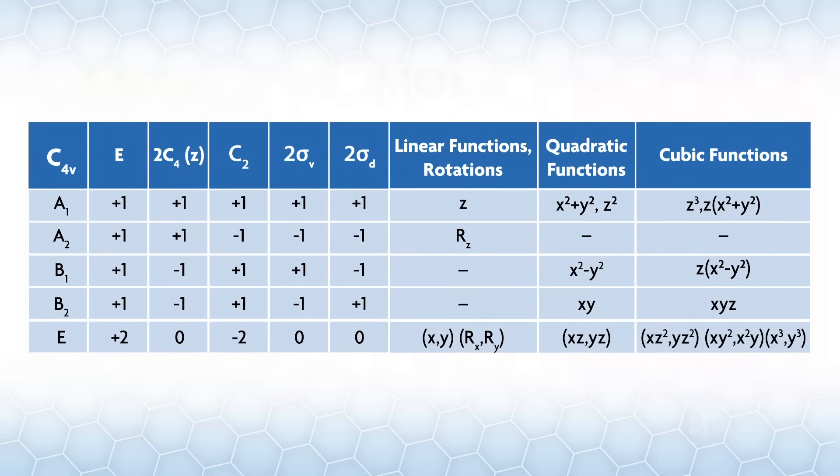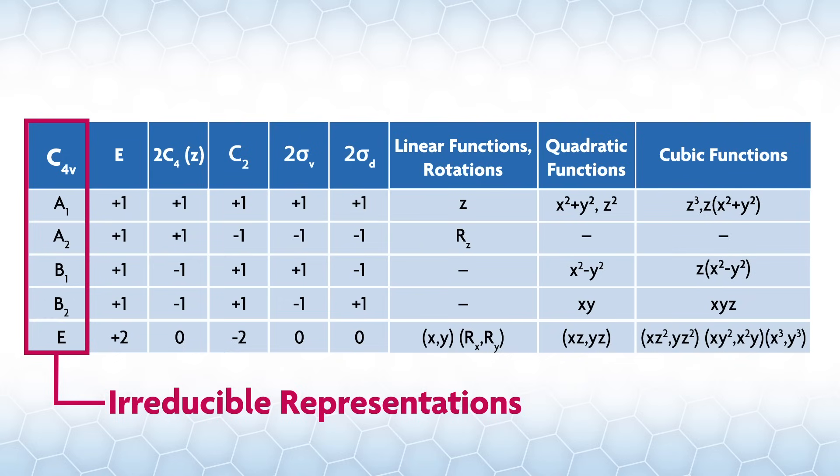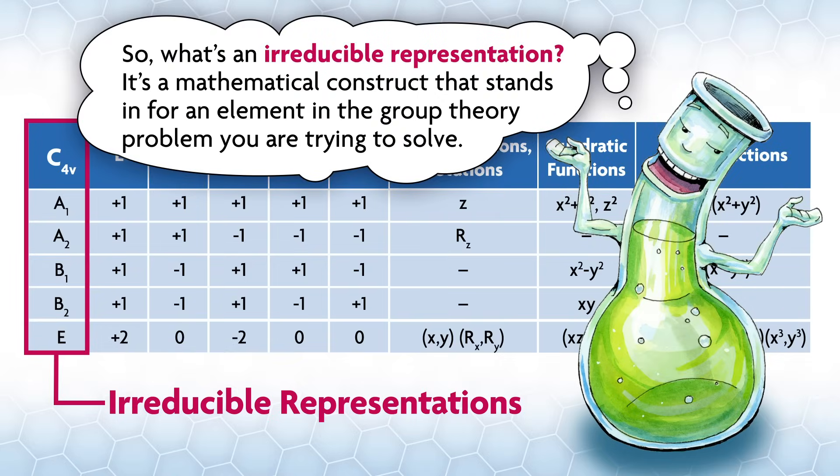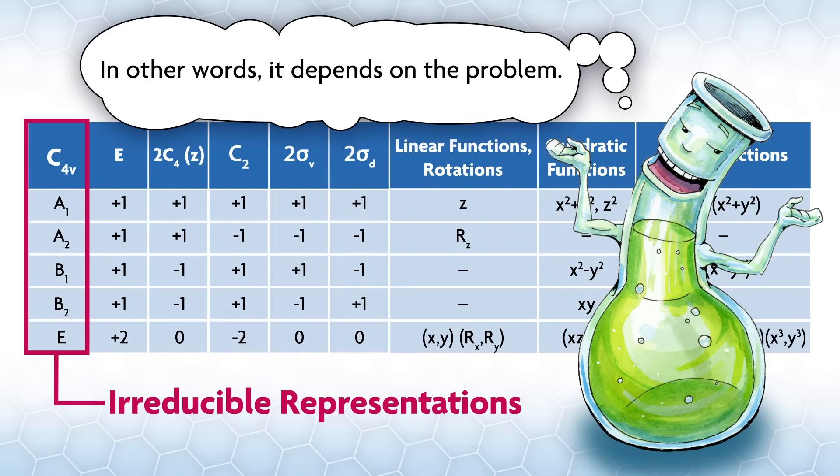Here is the C4v character table. In the left column, the symbols like A1, E, and B2 are the Mulliken symbols for the irreducible representations. So what's an irreducible representation? It's a mathematical construct that stands in for an element in the group theory problem you're trying to solve. In other words, it depends on the problem.